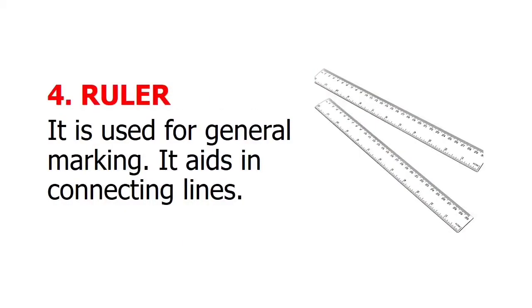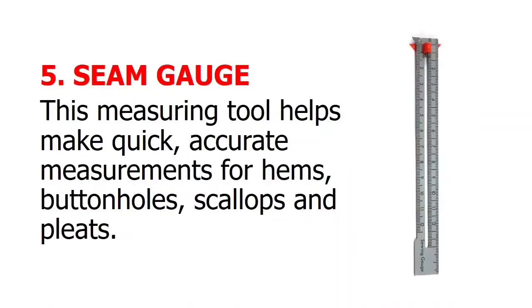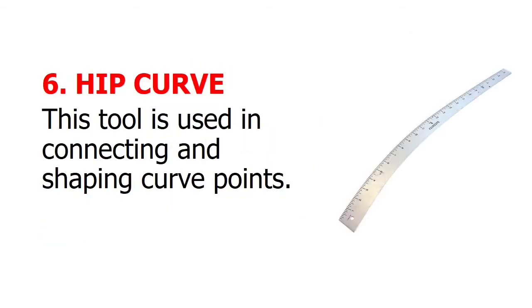Ruler: it is used for general marking and aids in connecting lines. Seam gauge: this measuring tool helps make quick, accurate measurements for hems, buttonholes, scallops, and pleats.